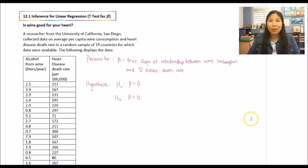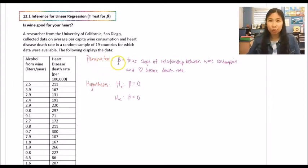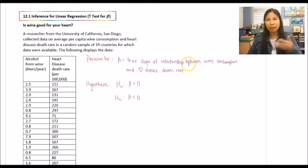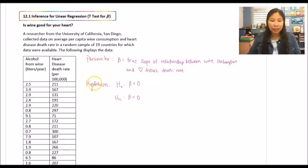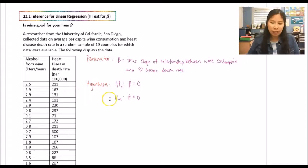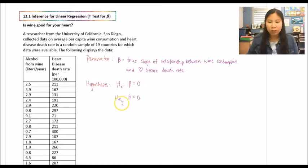In the PHANTOM process, we start with stating parameters. Beta equals the true slope of the relationship between wine consumption and the heart disease death rate. For our hypotheses: the null is beta equals zero — no relationship. The alternative is beta less than zero, because we are testing for a negative linear relationship.